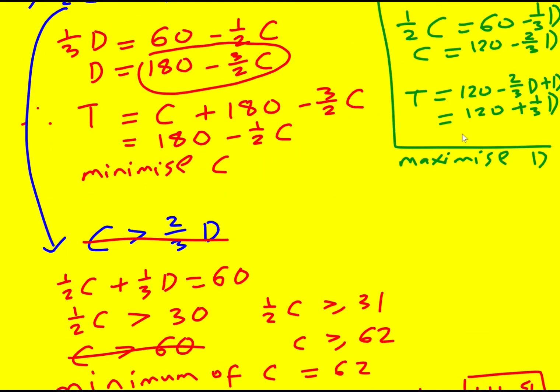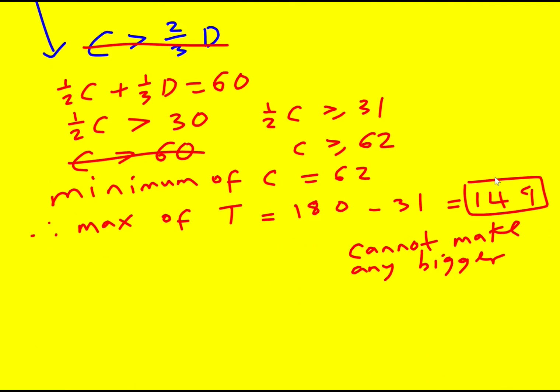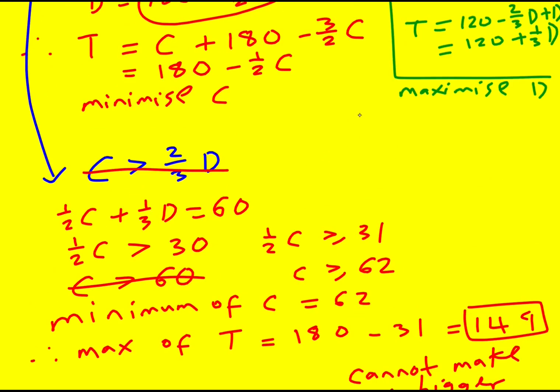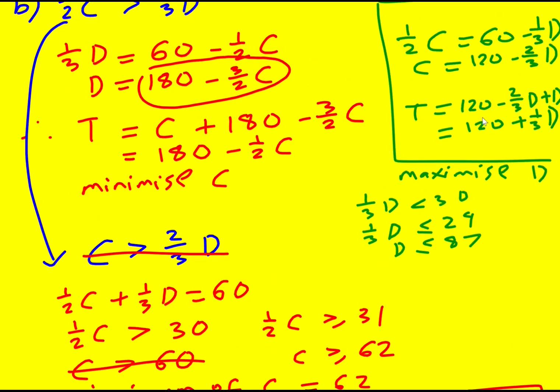Let's just look at if we had gone the other route, maximizing D. Well, in that case, let me write it over here. Then I would get that in fact one-third D must be less than 30, and therefore one-third D must be less than or equal to 29, so D must be less than or equal to 87. And now I want to maximize D, so T would equal 120 plus one-third of 87, which is 29, which again gives me 149. So I can get there that route as well.